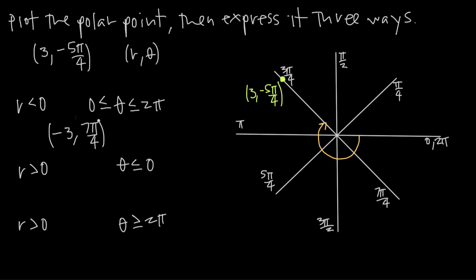The reason that works: starting at the positive direction of the x-axis and moving in the positive direction to 7 pi over 4 gets us to this spot. Then because r is negative, instead of going out in the direction of 7 pi over 4, negative 3 means we go in exactly the opposite direction, 3 units from the origin — and we wind up at exactly the same point. So (negative 3, 7 pi over 4) is the same as (3, negative 5 pi over 4).